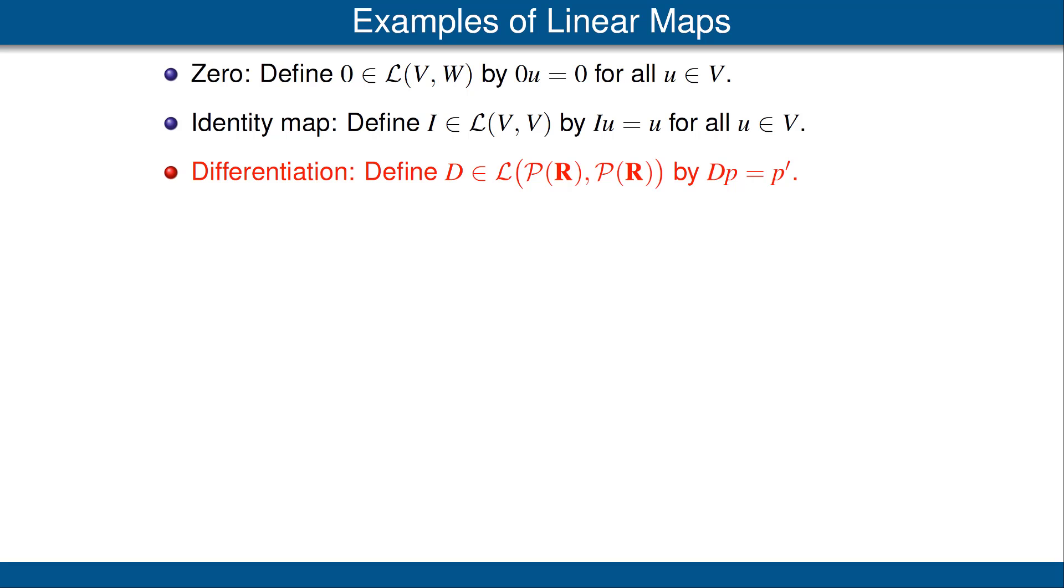To verify that D is a linear map, we must verify the two properties of additivity and homogeneity. The additivity property is simply the property of derivatives, namely that the derivative of the sum of two functions is the sum of the derivatives. And the homogeneity condition is simply the result that the derivative of a constant times a function is the constant times the derivative of the function.